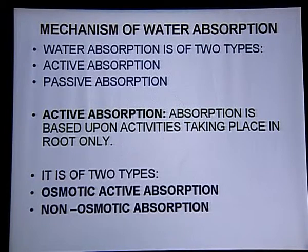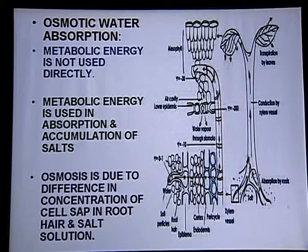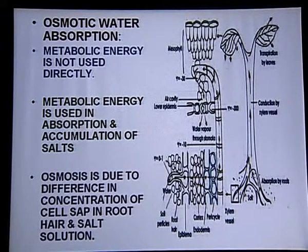Active absorption is of two types: osmotic active absorption and non-osmotic active absorption. In osmotic active water absorption, metabolic energy is not utilized directly. So metabolic energy is used only in the absorption and accumulation of salts — only for salt accumulation and absorption is this energy required.